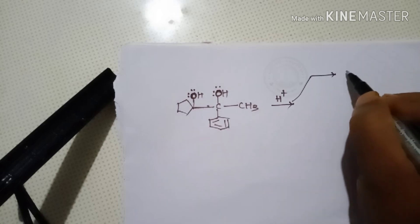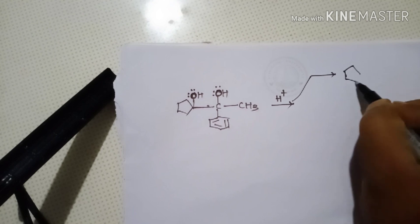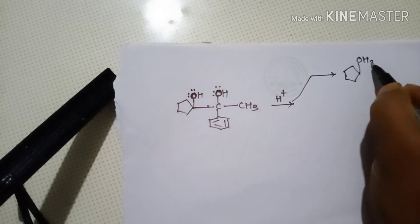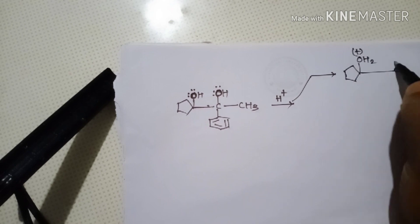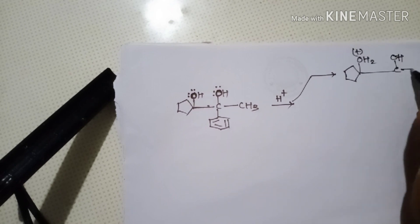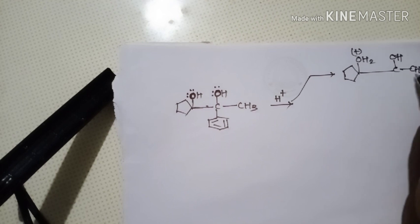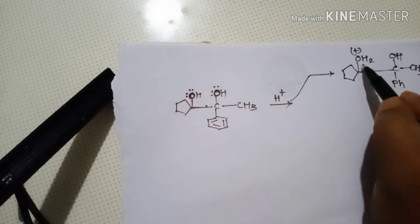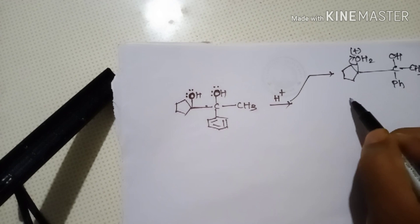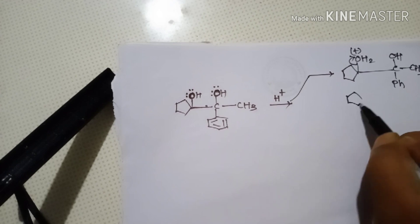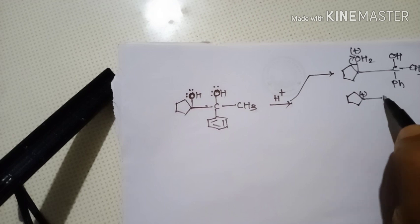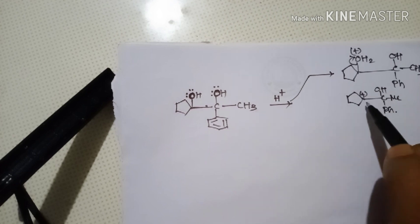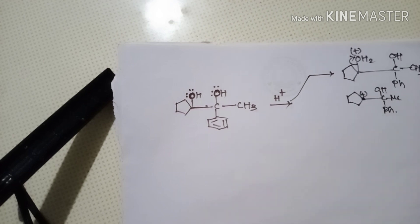The first step: OH₂ to the power plus. OH comes here, CH₃ comes here, benzene comes here. If this breaks up, where will the groups go? With plus here, CH group here, and pH.